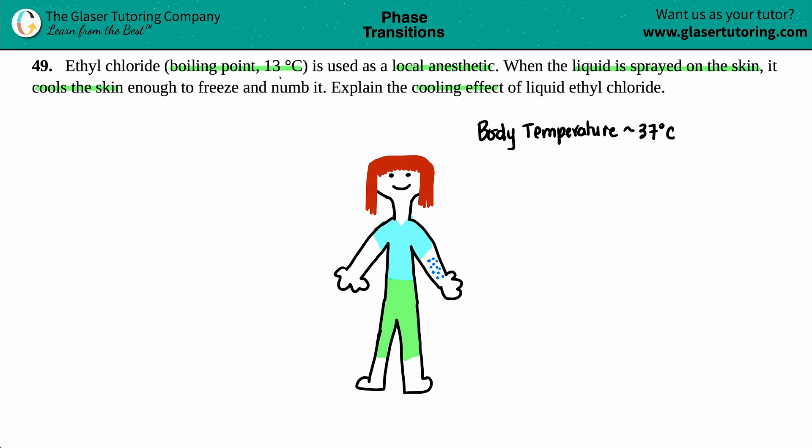And for ethyl chloride, the boiling point is 13°C. So that means if we're dealing with the boiling point of 13 degrees Celsius...